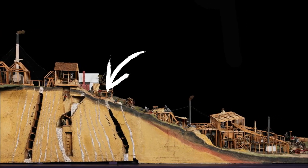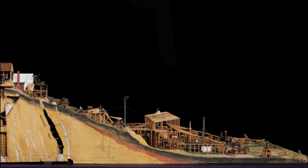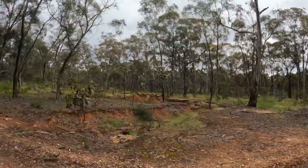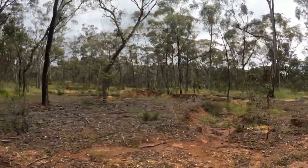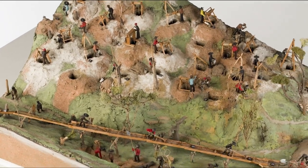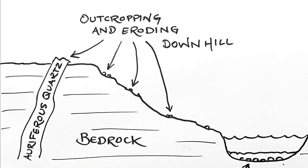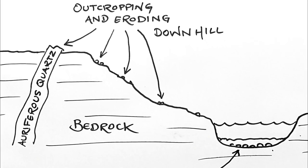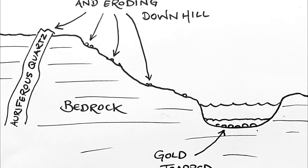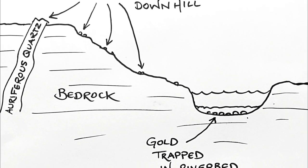Gold can either be mined directly from the reef, crushing the quartz and processing for gold, or from nearby areas where the gold has been eroded away from the reef over time. This latter form of mining is called alluvial mining. Gold which has broken away from its original location in a reef gets washed away over time by water and gravity, and is eventually deposited into creeks and rivers.